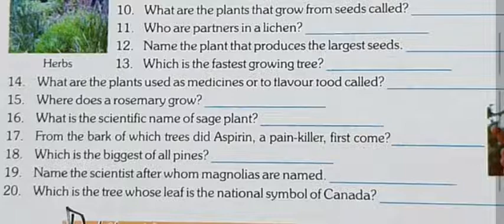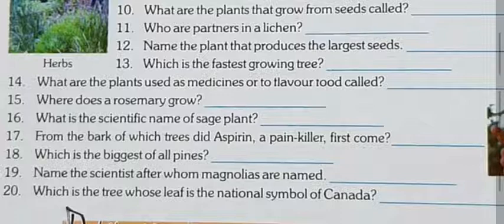Question number fourteen: what are the plants used as medicines or to flavor food called? Plants that are used in medicines or to add flavor — that is taste — to food are termed herbs. For example, coriander is a herb. When you add coriander to food, its flavor is greatly enhanced. So the plants used as medicines or to flavor food are called herbs.